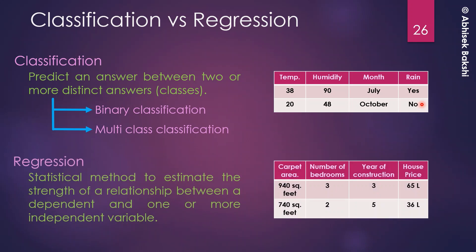For regression, it is a statistical method to estimate the strength of a relationship between a dependent variable and one or more independent variables. For example, based on carpet area, number of bedrooms, and year of construction, we can estimate the house price. Regression tries to find the relationship between these features and the output.